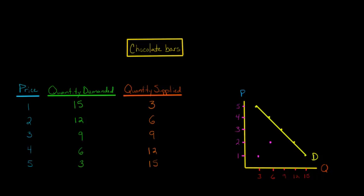At a price of $3, they're willing to supply 9 chocolate bars. At a price of $4, they're willing to supply 12. And at a price of $5, they're willing to supply 15. So let's draw a line. This is our supply curve. I'm just going to label it S. So that's our supply curve, and we've got a demand curve.